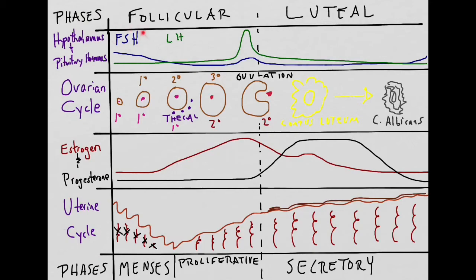Now for a quick relational overview. When FSH levels are high, it'll pick one primordial follicle to be developed that month. Primordial follicle will develop into a primary follicle, then a secondary follicle, and then finally a tertiary follicle. Ovulation would be the next step.